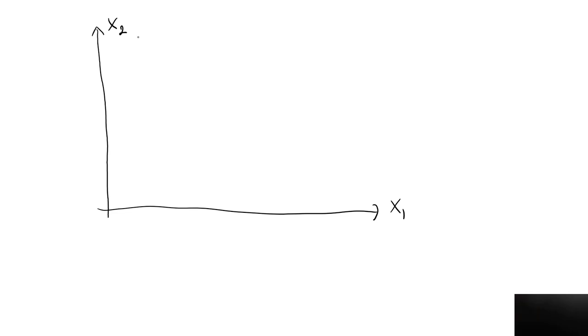So here is my first indifference curve, something like this. Pick any two bundles on this curve and the consumer will be indifferent between these two bundles. Now, I'm going to draw a second different indifference curve, intersecting the first one. Maybe something like this. Let's label this one and two.